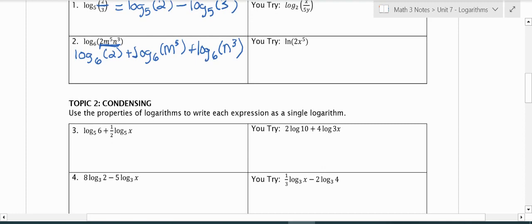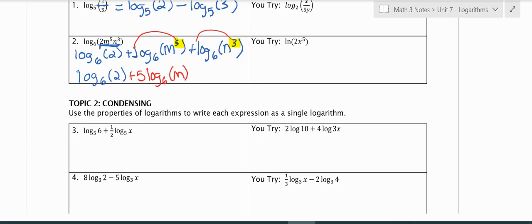We have these exponents that we can rewrite so we don't have to have an exponent in our log. Log base 6 of 2 stays the same. The 5 can actually come out front: 5 log base 6 of m. And then the 3 can come out front. This would be, if I wanted to expand it, equivalent statements. It's the same as what we originally had, just expanded out.